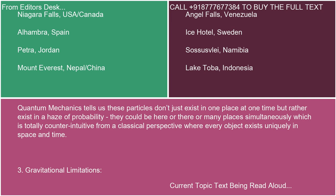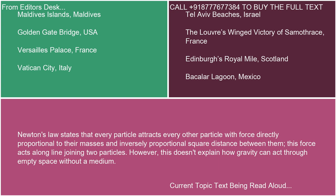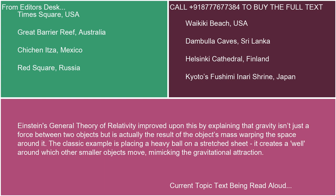Three: gravitational limitations. Newton's law states that every particle attracts every other particle with force directly proportional to their masses and inversely proportional to the squared distance between them. This force acts along the line joining two particles. However, this doesn't explain how gravity can act through empty space without a medium. Einstein's general theory of relativity improved upon this by explaining that gravity isn't just a force between two objects, but is actually the result of the object's mass warping the space around it.